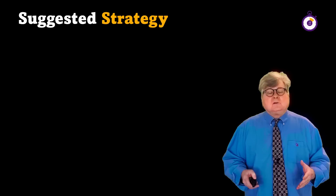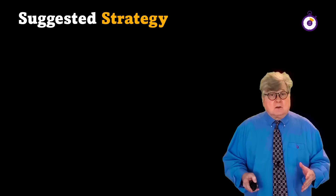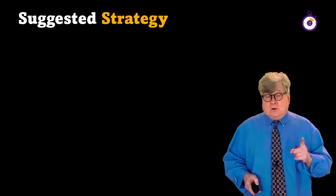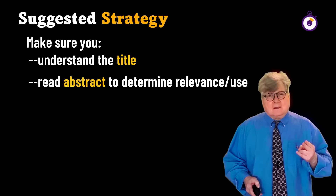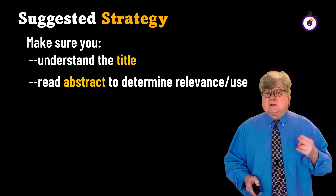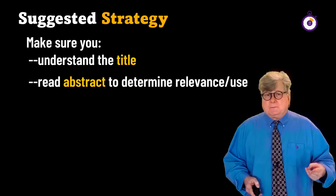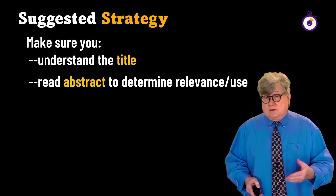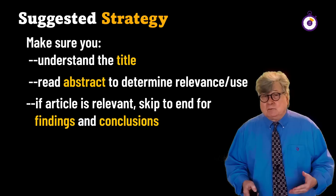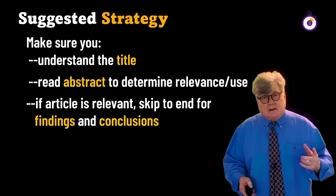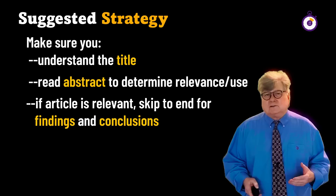Here's the overall strategy for academic journal article reading. First, make sure you understand the title — it opens the door to understanding what is to come. Next, study the abstract; knowing its parts — background, method, results, and conclusion — will help you decide whether to spend time on this article. If you continue, skip to the end for findings and conclusions. If you need deeper understanding, circle back to the introduction and literature review for background on what's at stake.